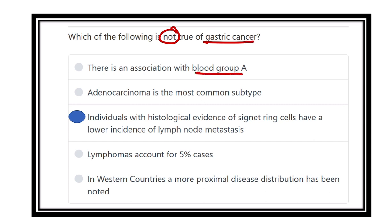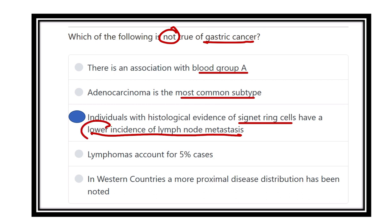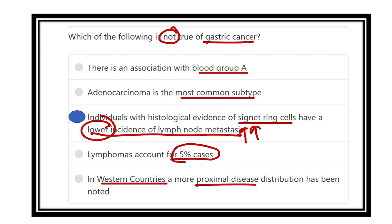Reviewing the options: association with blood group A — some evidence is present, so true. Adenocarcinoma is most common subtype — also true. Individuals with histological evidence of signet ring cells have lower incidence of lymph node metastasis — this is NOT true, because the chance of metastasis is actually very high. Lymphoma accounts for 5 to 7 percent — true. In western countries more proximal disease distribution occurs — also true. In low socioeconomic conditions, it is distal disease in the pyloric region.